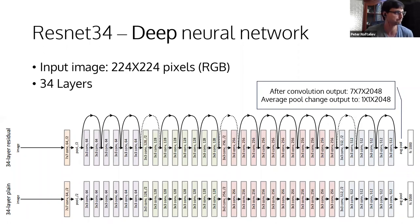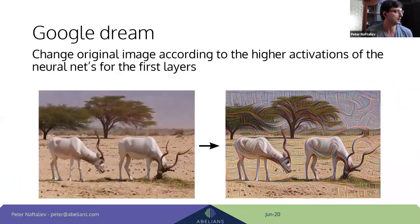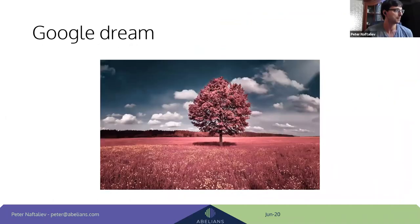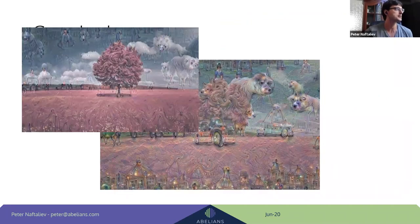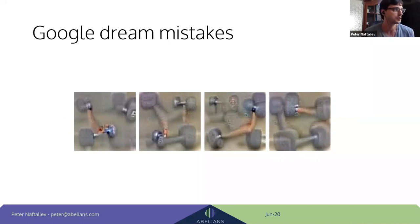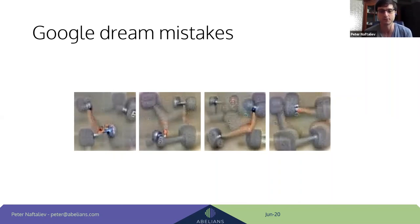One more cool example from Google Dream: we wanted to see how a network sees dumbbells, and the result always shows an arm attached to the dumbbell. This reveals a training bias — photos with dumbbells usually came with a person next to them, so the network learned to expect an arm whenever it sees a dumbbell. This is exactly the kind of debugging insight Google Dream enables.